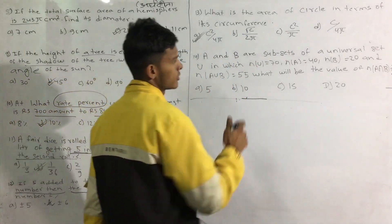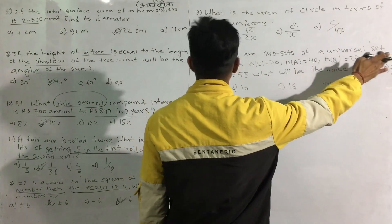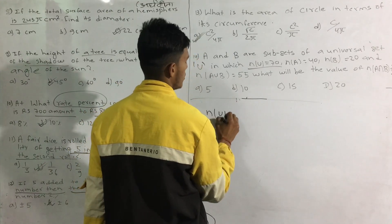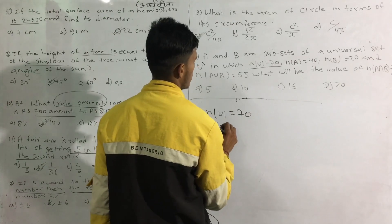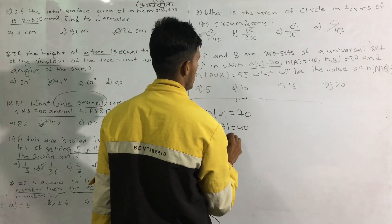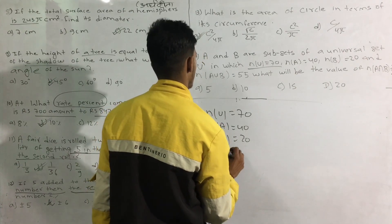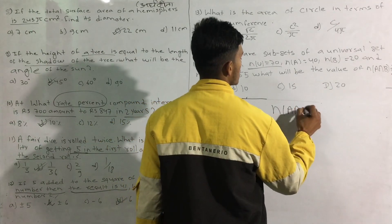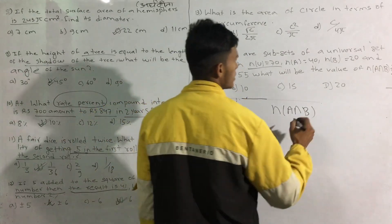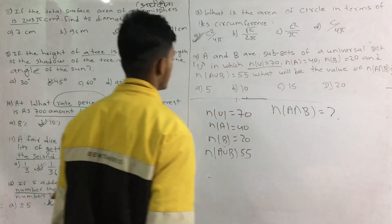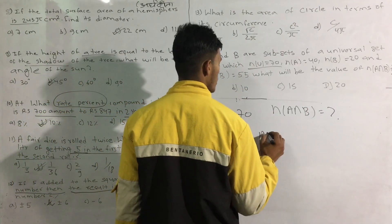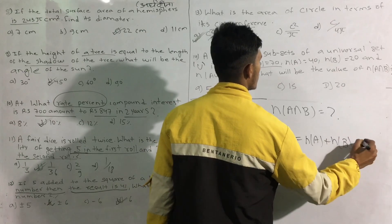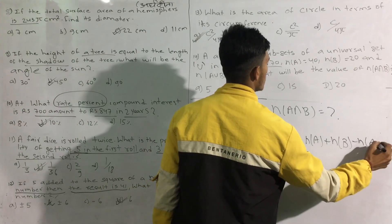A and B are subsets of a universal set U. n(U) = 70, n(A) = 40, n(B) = 20, and n(A ∪ B) = 55. What will the value of n(A ∩ B) be? I will tell you: n(A ∪ B) equals n(A) plus n(B) minus n(A ∩ B).